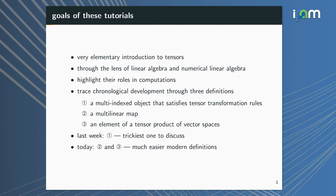Today we're going to talk about the second and the third definitions. Unfortunately, by the time I got to the end of the second part — the multilinear map — I sort of ran out of time. I don't think I'll have time to talk about the tensor product of vector spaces today. So today we're going to focus on the second definition, which is arguably the easiest: if you know what a linear map is, you automatically know what a multilinear map is.